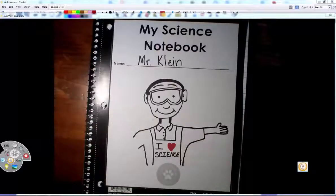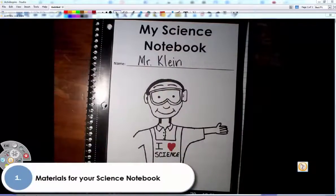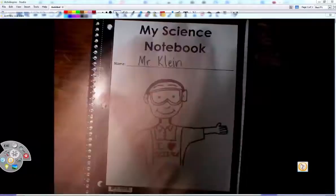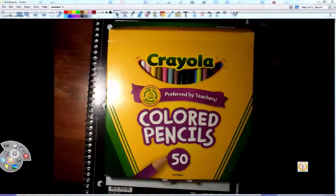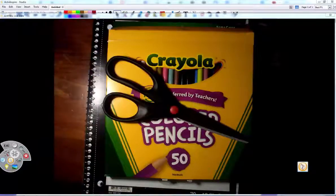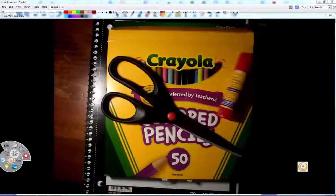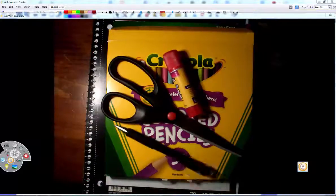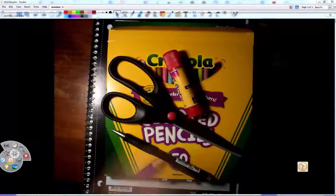What you'll need is obviously the interactive science notebook I gave you in class, along with the worksheets and pages I gave you, and then also things like color pencils, a pair of scissors, a glue stick, and a pencil. You'll need these materials in order to use your science notebook effectively, in addition to whatever it is I give you.